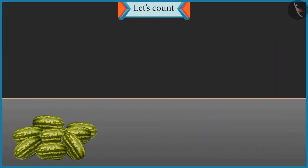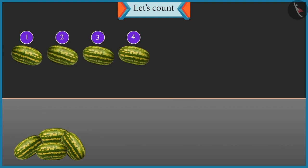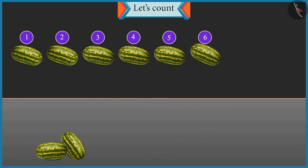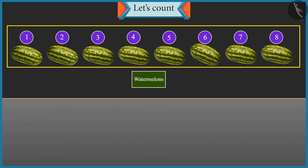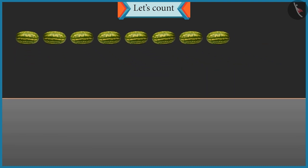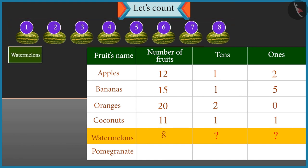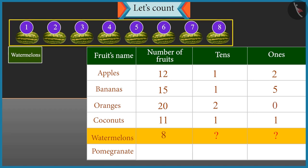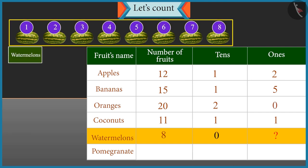Now count these watermelons and tell their count. One, two, three, four, five, six, seven and eight. There are eight watermelons. So how many tens and ones are there in eight? There are only eight watermelons, so we cannot form any group of ten. So there is zero tens and eight ones.